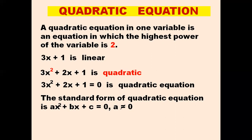Why must a not equal 0? Because if a equals 0, the x² term will vanish — 0 multiplied with x² is 0 — so it will not remain a quadratic equation. So the standard form is ax² plus bx plus c equals to 0. Now if we compare 3x² plus 2x plus 1 equals 0 with this standard form, we see a is 3, b is 2, and c equals to 1. This is how you find the values of a, b and c.